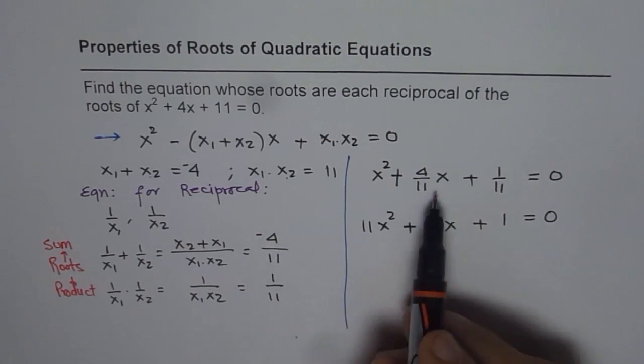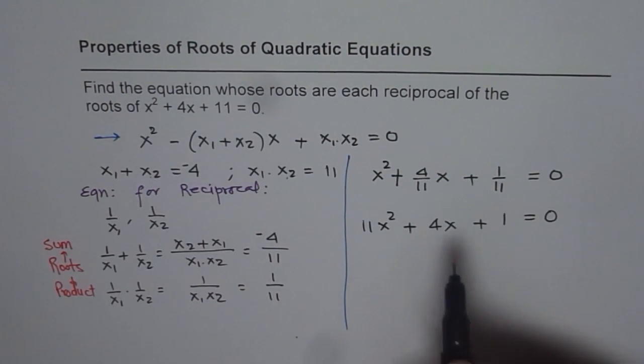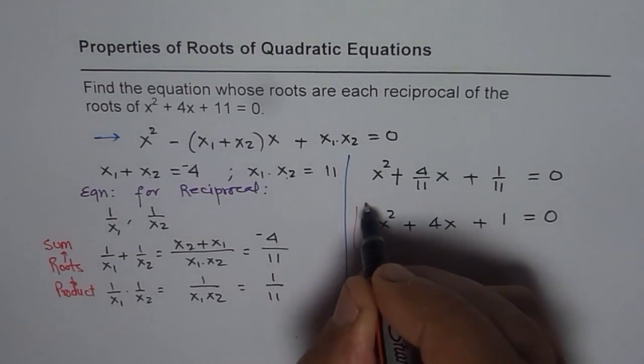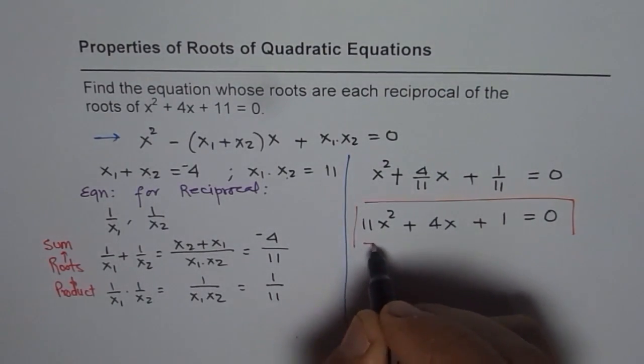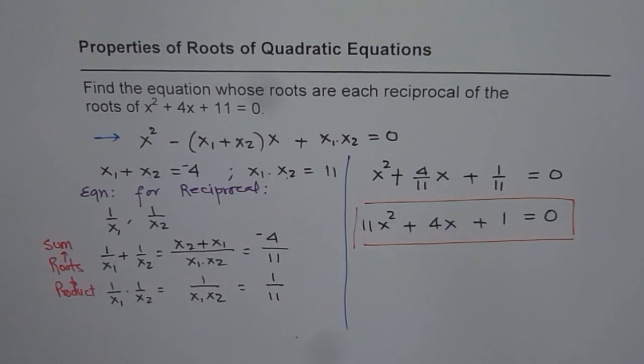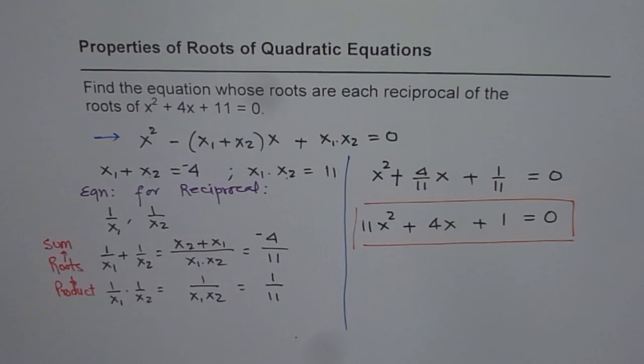And substituting these values in our equation, we get our answer. So the quadratic equation with the reciprocal roots will be 11x² + 4x + 1 = 0. I hope that helps. Thank you and all the best.